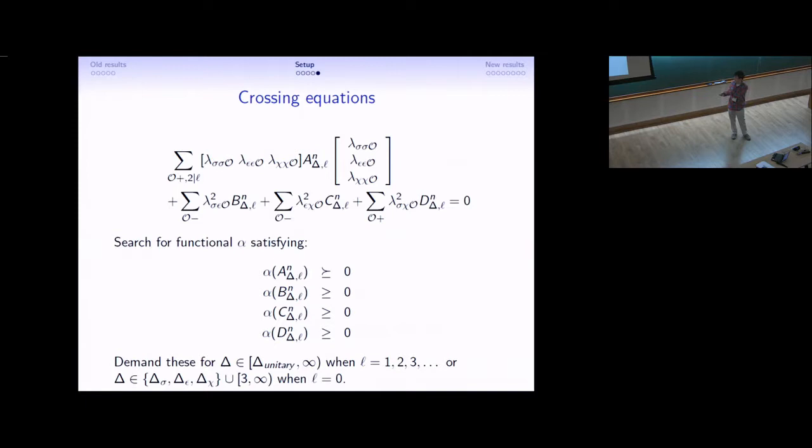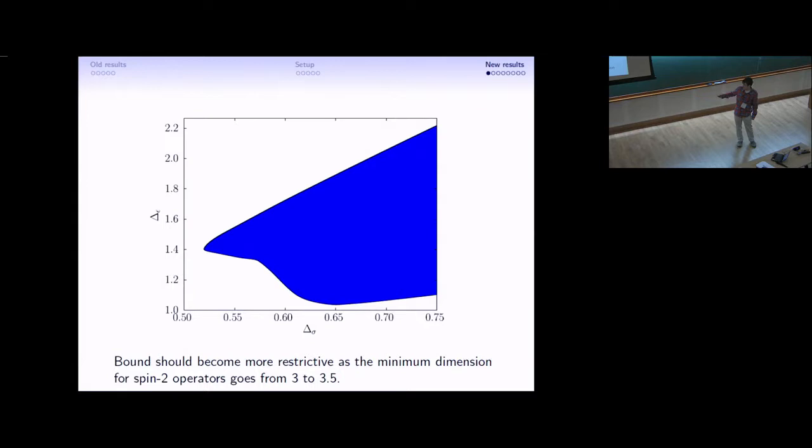So scanning over these dimensions, we make an exclusion plot showing the points where the short-range Ising model is, once again, continuously connected to the mean field theory over here, because of the third relevant scalar.